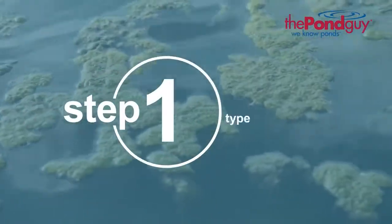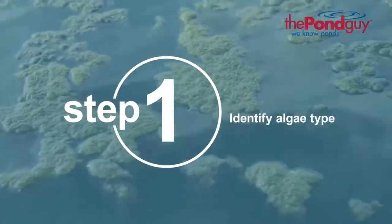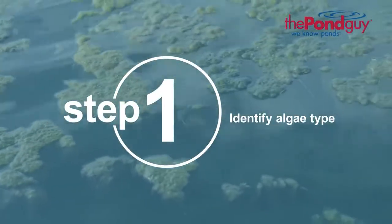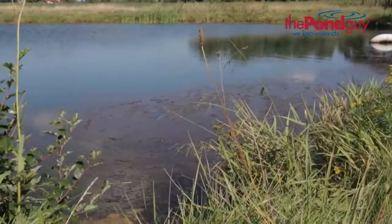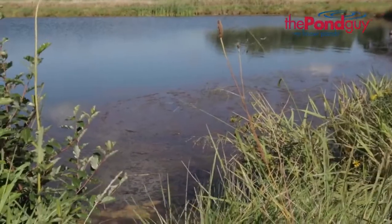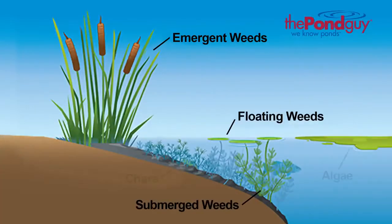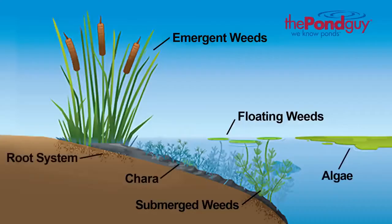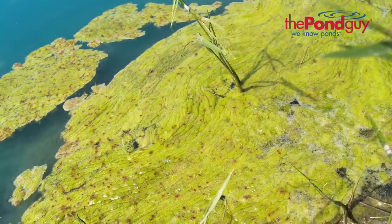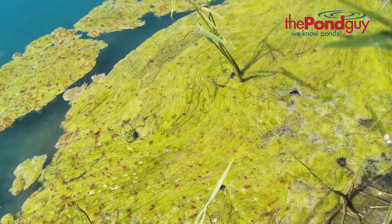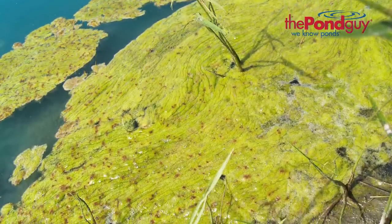The first step in controlling algae is to identify the type of algae you're dealing with. Some algae can easily be mistaken for pond weeds. An easy way to distinguish between the two is to remember that aquatic weeds have well-defined root systems that anchor themselves to the pond's bottom. Algae, on the other hand, do not, and grow by fragmentation.